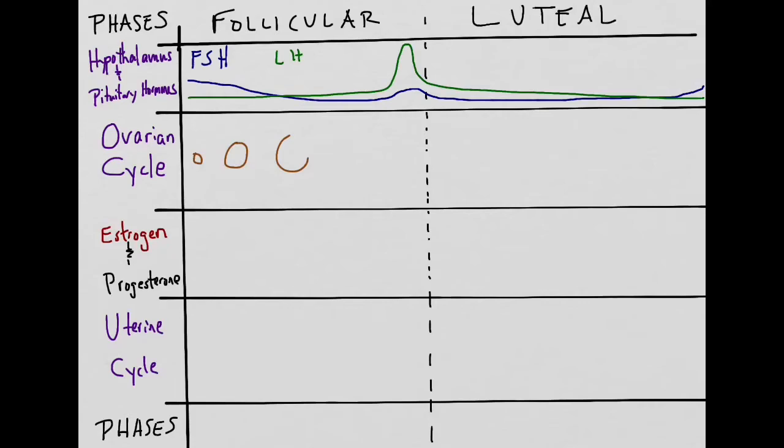The ovarian cycle will begin with the rise of FSH. A primordial follicle will turn into a primary follicle, then a secondary follicle, and then a tertiary follicle. At the secondary follicle phase, thecal cells will form. These thecal cells will produce estrogen.